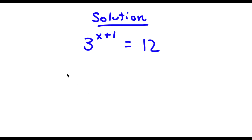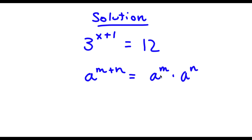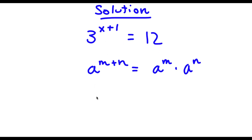Now, if I have something in the form a to the power of m plus n, this is equal to a to the power of m times a to the power of n. So in this case, 3 to the power of x plus 1, we can write this as 3 to the power of x times 3 to the power of 1. Now this is equal to 12.